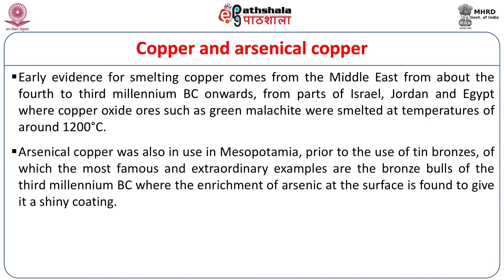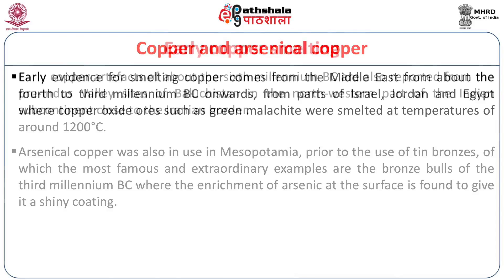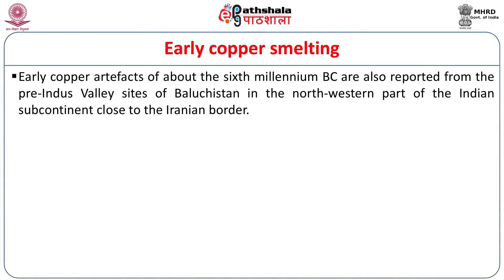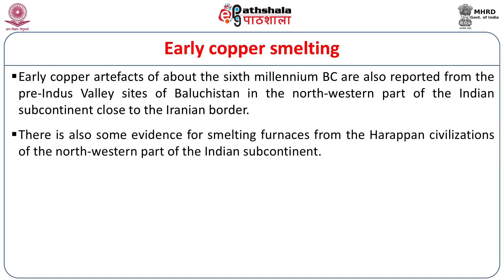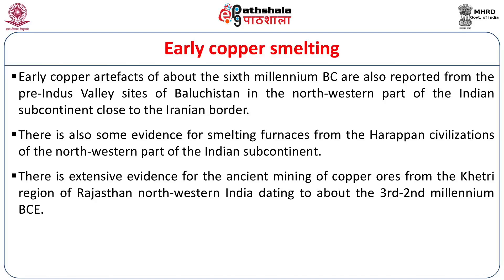Arsenical copper was also used in Mesopotamia prior to the use of tin bronze, of which the most famous examples are the bronze bulls of the third millennium BCE, where enrichment of arsenic at the surface gave a shiny coating. Early copper smelting is reported from the pre-Indus Valley sites of Balochistan in northwestern India, close to the Iranian border, dating to about the sixth millennium BCE. There is also evidence for smelting furnaces from the Harappan civilization and extensive evidence for ancient copper ore mining from the Khetri region of Rajasthan, dating to about the third to second millennium BCE.